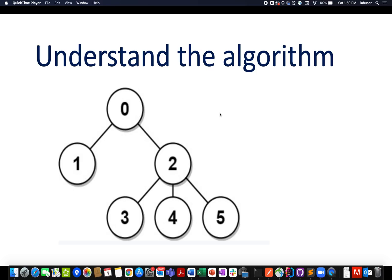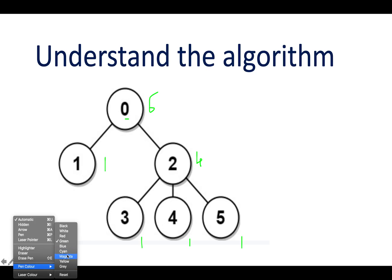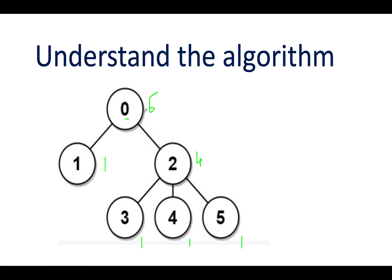The solution requires some preprocessing on the input tree. The first step is to identify the number of nodes that fall under each particular node, including that node itself. For node zero, all six nodes fall under it. Node one has only one node. Node two has four nodes. Nodes three, four, and five each have one node.